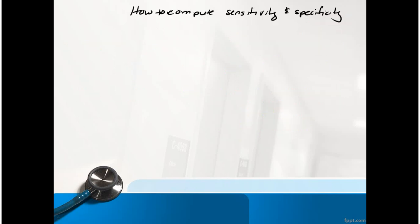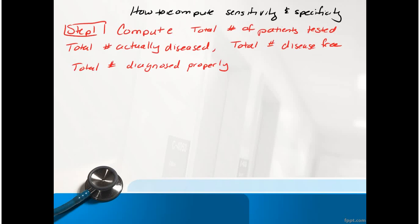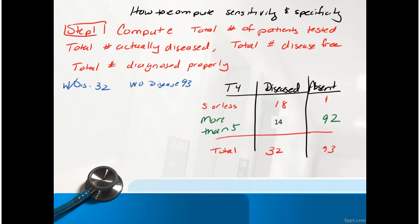So how do we compute sensitivity and specificity? The first step is to use these numbers. We need the total number of patients that were tested, the total number that actually were diseased, the total number that were disease-free, and the total number we diagnosed properly. With the disease was 32, without the disease was 93. I had an erroneous number here - it's actually 14 in this column, not 17. The total number of patients were 125.